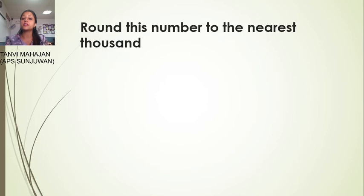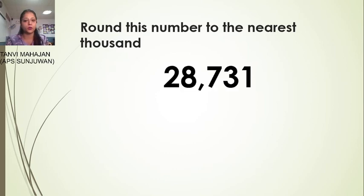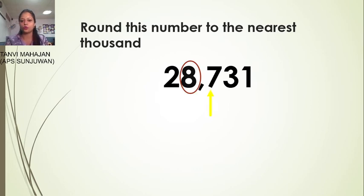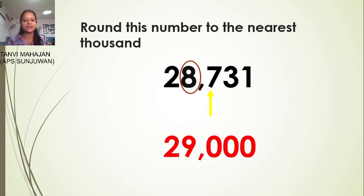Now round this number to the nearest thousand: twenty-eight thousand seven hundred thirty-one. Eight stands in the thousands place. The next door number is seven, and seven is more than five. So we add eight plus one, and it becomes twenty-nine thousand.